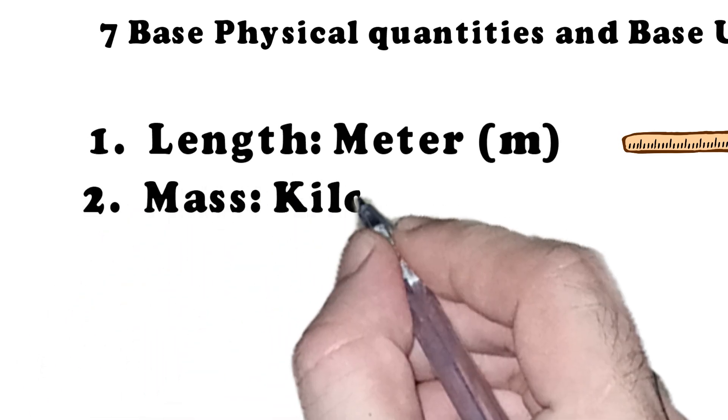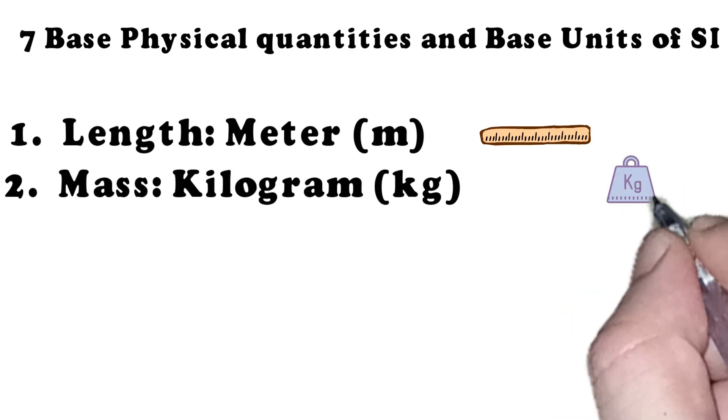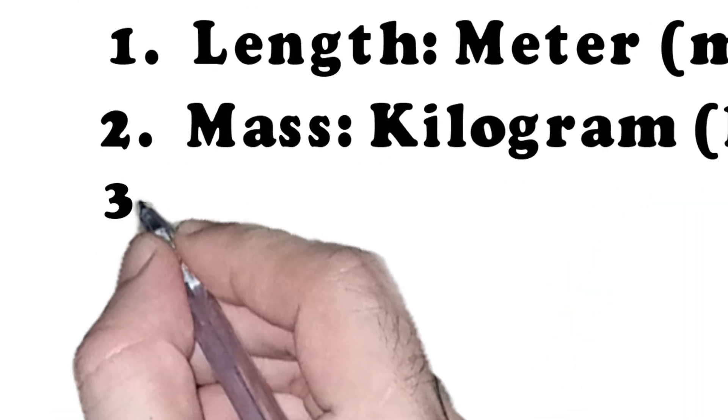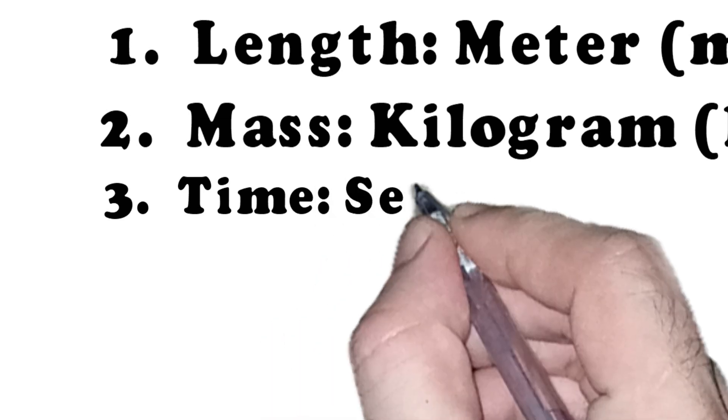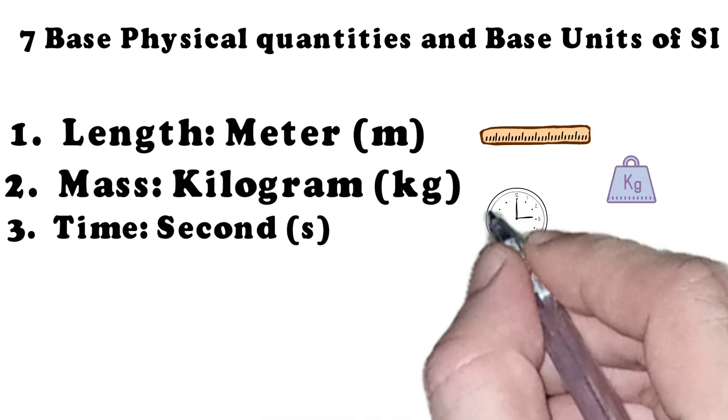Next is mass measured in kilogram or kg, it tells us how much matter is in an object. Time is measured in seconds, denoted as S, and it's the duration between events.